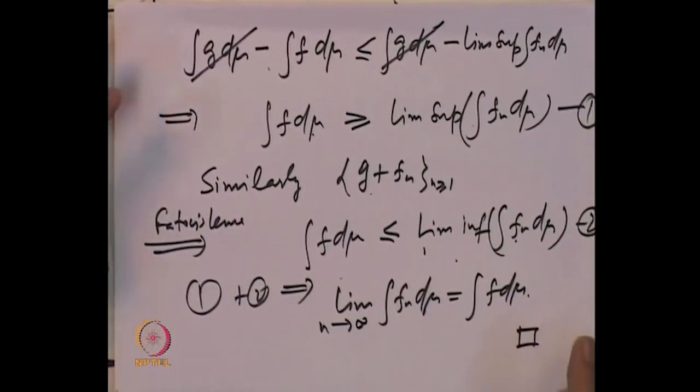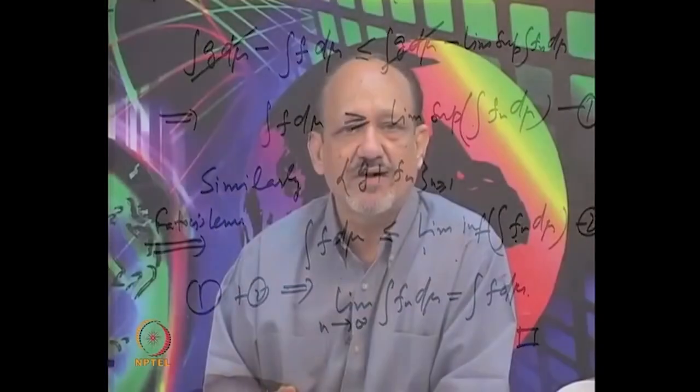The proof of the Dominated Convergence Theorem is essentially a straightforward application of Fatou's Lemma: since |f_n| ≤ g, both g − f_n and g + f_n are sequences of non-negative measurable functions, and applying Fatou's lemma to each gives the conclusion that ∫f dμ = lim ∫f_n dμ. We proved this under pointwise convergence and domination; the modification for the almost-everywhere case is simple and will be addressed next time. Thank you very much.